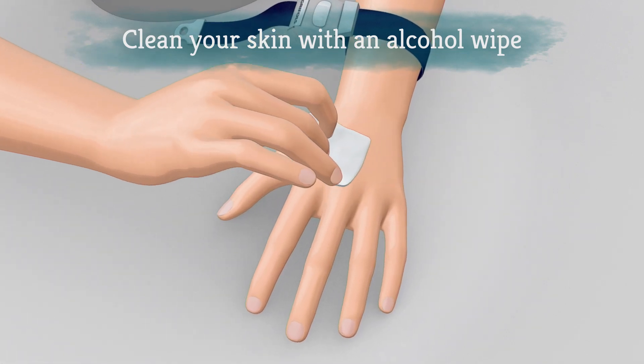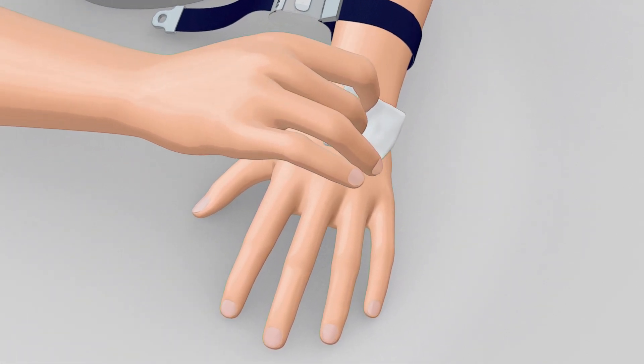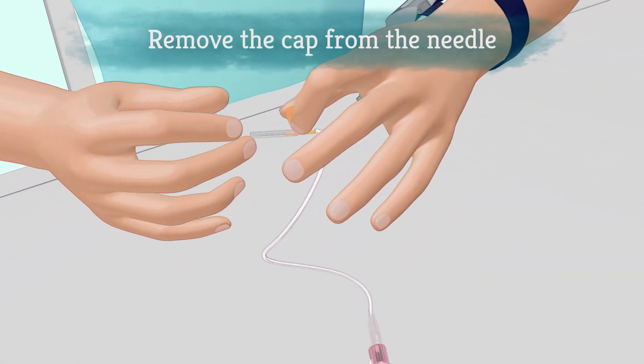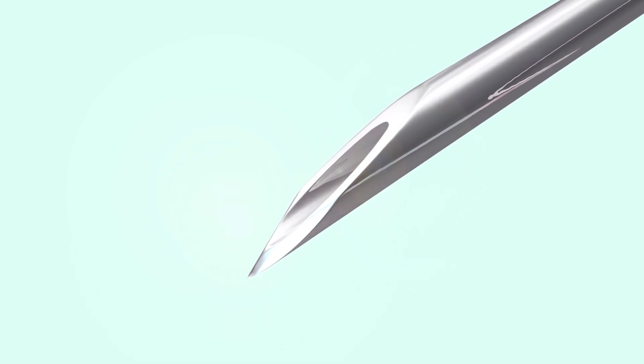Use an alcohol wipe to clean the area of the skin above the vein where you are going to infuse. Remove the cap from the butterfly needle and hold the wings between your thumb and first finger, with the hole facing up and the sharp end facing down.